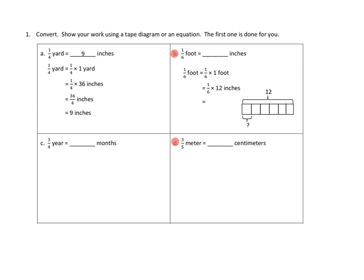So let's take a look at our question here. The directions for number one are pretty simple. Convert. Show your work using a tape diagram or an equation. The first one is done for you. I'm going to go ahead and I'll let you read 1a, and I'm going to go ahead and do 1b, where they've kind of set it up for us.